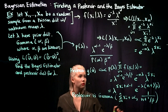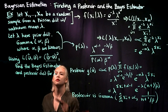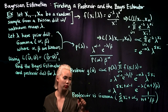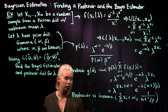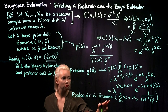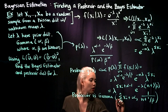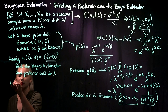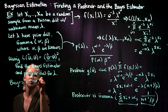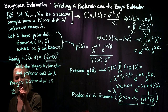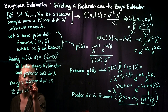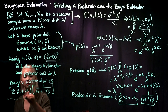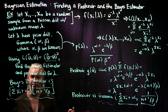Now we've found our posterior distribution. To find the Bayes estimator under squared error loss, we know from our theorem that we need the posterior mean — the mean of the posterior distribution. The posterior is gamma, so its mean is the first parameter times the second parameter. Therefore, our Bayes estimator is the sum of the x's plus alpha, times one over n plus one over beta.